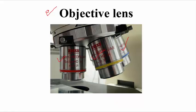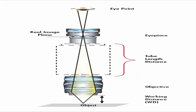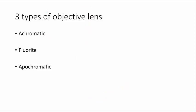Now we can look at the objective lens under structure, not just magnification. Under structure, look at the types. There are three types of objective lenses structurally. The first is the achromatic lens, the second is the fluorite lens, and the third is the apochromatic lens.